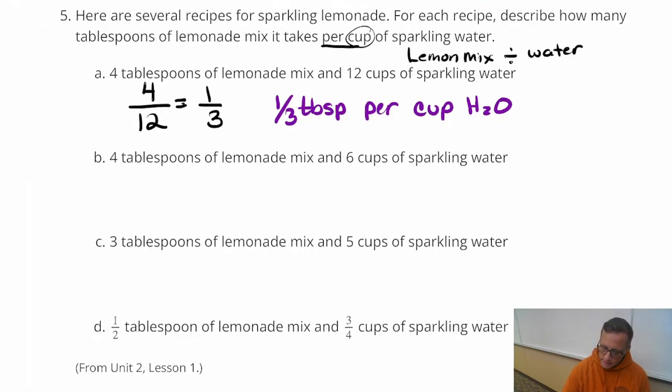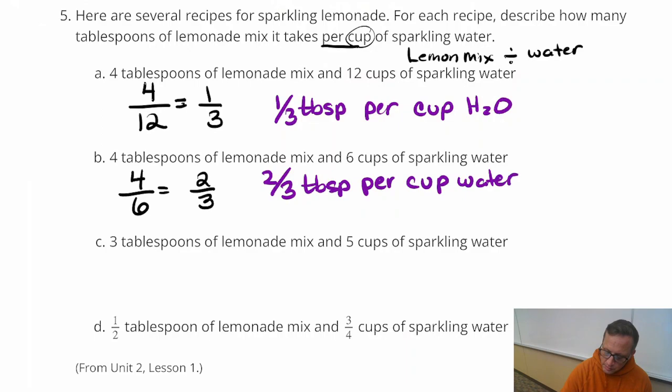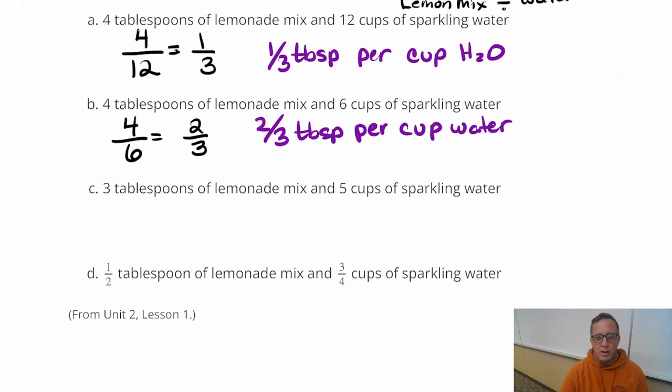And then for this one, I'm just going to approach this one the same way. Four tablespoons of lemonade mix and six cups of sparkling water. So we're going to do four divided by six. Now four divided by six is two-thirds. So that is two-thirds of a tablespoon of lemonade mix per cup of water.